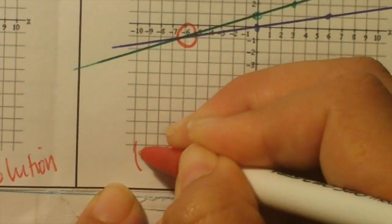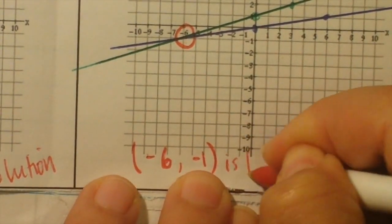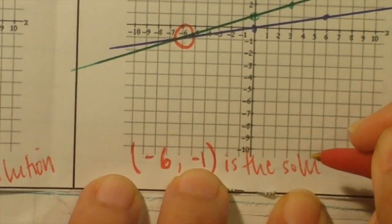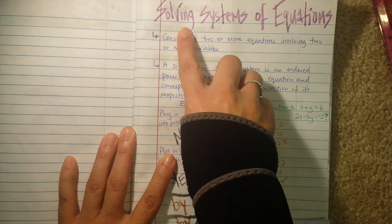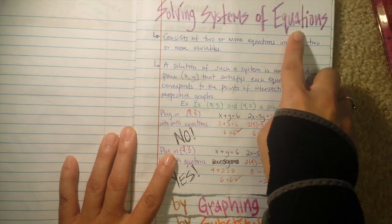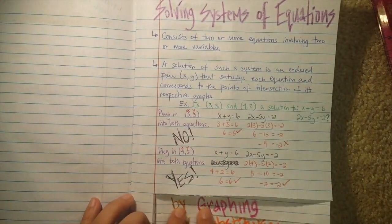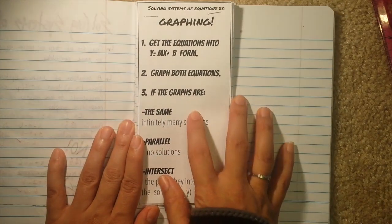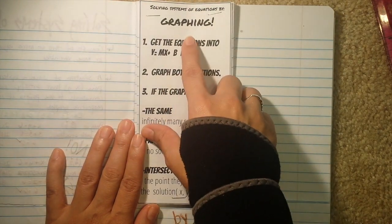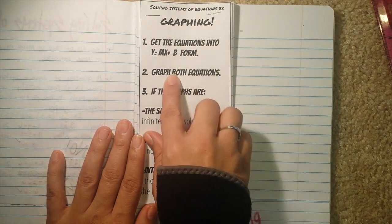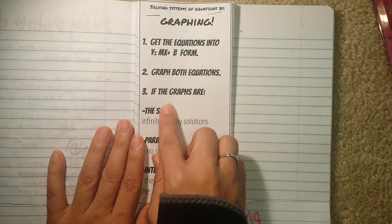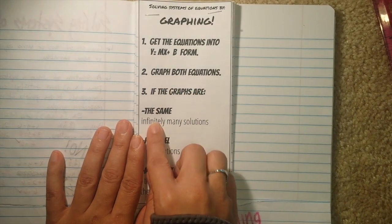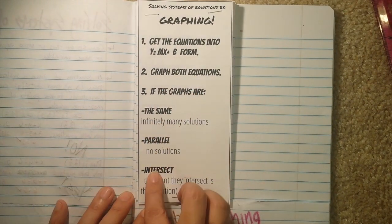I really hope you watched this video — it's going to make the work we're doing in class so much easier. To summarize: solving systems of equations by graphing is relatively easy. Number 1, get the equations into y equals mx plus b form. Number 2, graph both equations. If the graphs are the same, infinitely many solutions. If they're parallel, no solutions. If they intersect, one solution at the intersection point.